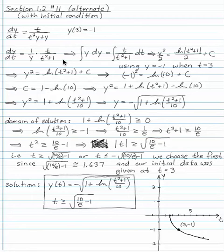We separate the variables, integrate both sides. We have y squared over 2 equals log of absolute value t squared plus 1 over 2 plus a constant. We gather the constants on the right-hand side. t squared plus 1 is always positive, so the absolute value signs we can change to parentheses.